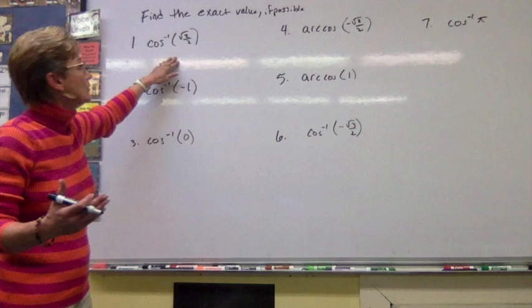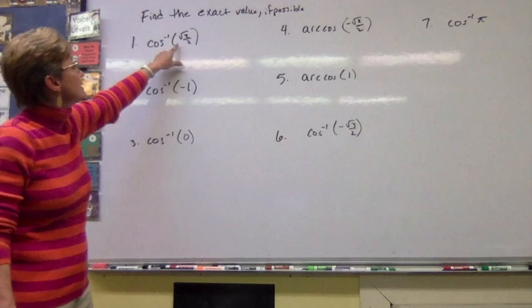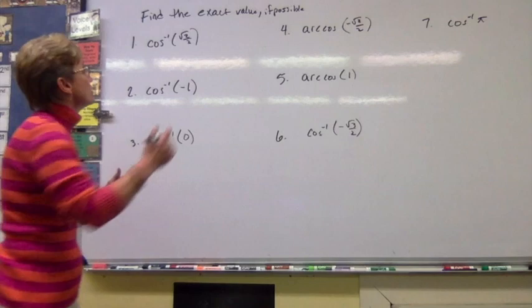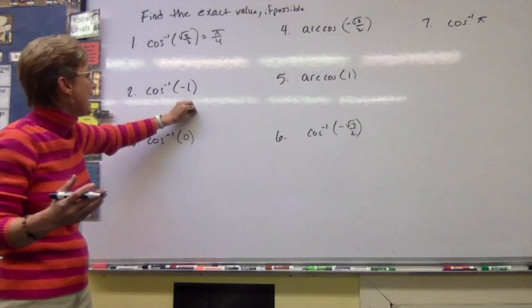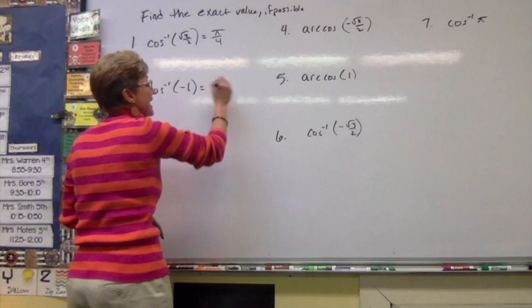Find the exact values if possible. What angle is cosine equivalent to square root of two over two? Since this is a positive value, we know it's in the first quadrant, so this is pi over four. Next: what angle between zero and pi is cosine equivalent to negative one? That occurs one place only — at pi.